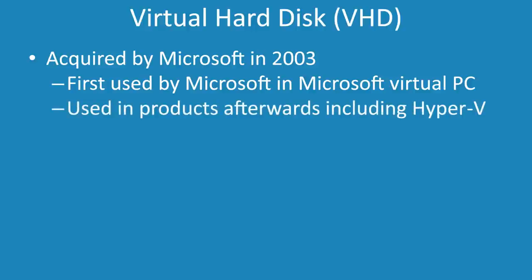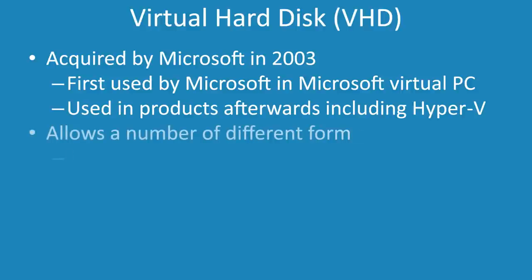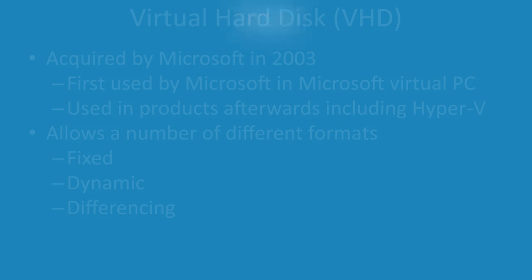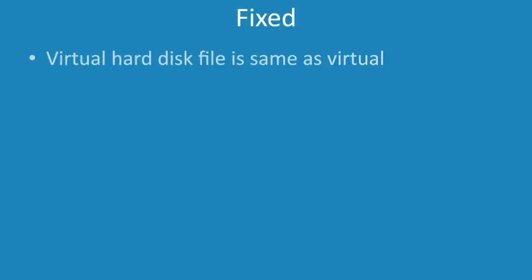The format also allows a number of different file formats for the virtual hard disk. These include fixed, dynamic and differencing. The fixed virtual hard disk is simply when the file containing the virtual hard disk is the same size as the virtual hard disk.